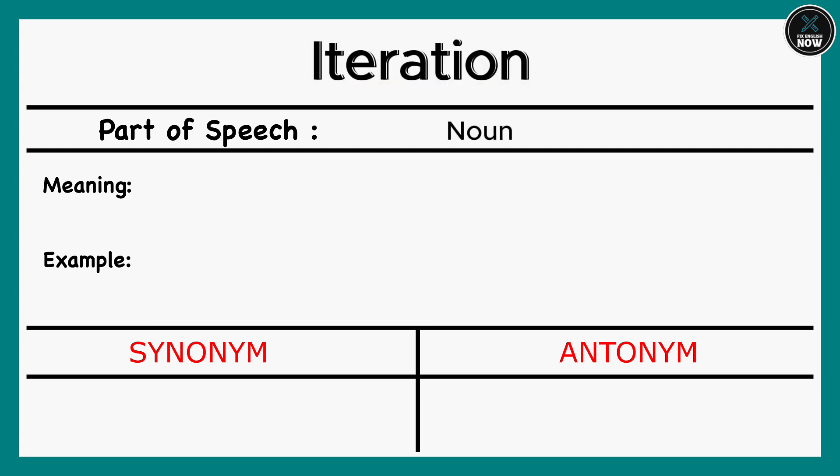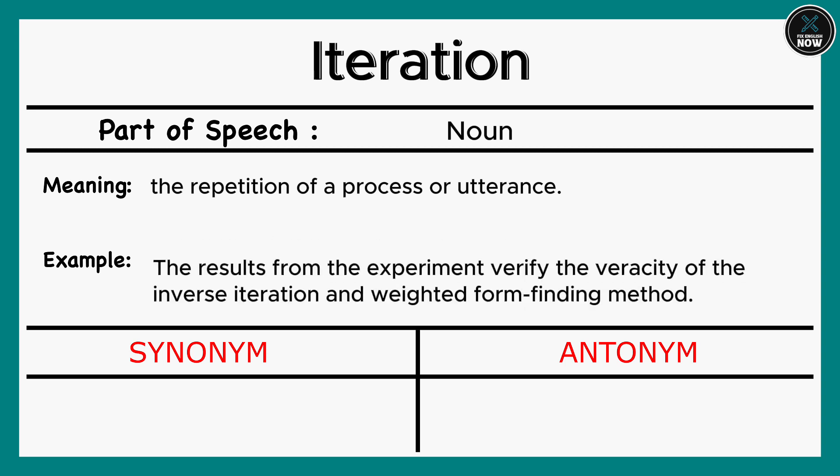Iteration: The repetition of a process or utterance. Example: The results from the experiment verify the veracity of the inverse iteration and weighted form-finding method. Synonyms: Repetition, Recurrence, Replication. Antonyms: Original, Innovation.